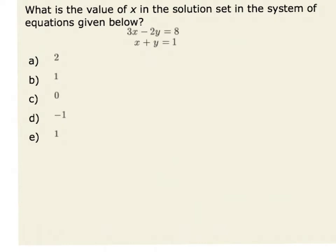Let's look at substitution. Looking at my second equation, I see that I could solve that equation for either x or y. I'll solve it for y by subtracting x from both sides. So my second equation becomes y is equal to 1 minus x.